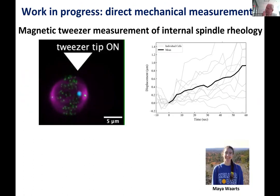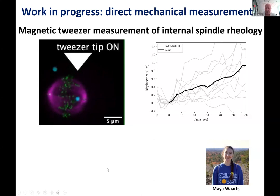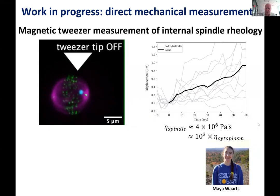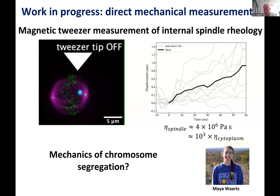That's fantastic, but one could argue it's a little indirect since you're just looking at static data. We're also doing more active mechanical measurements of the spindle. Maya, a graduate student in the lab, has been getting magnetic beads into human tissue culture cells and placing them inside the spindle, then using that to exert forces and directly measure the rheology of the spindle. To a first approximation, the spindle appears to be mostly viscous with very little overall elasticity, with a rheology roughly a thousand times greater than cytoplasm. She's exploring this in much more detail, with the ultimate goal of attaching beads to chromosomes and studying local mechanics of chromosome segregation.